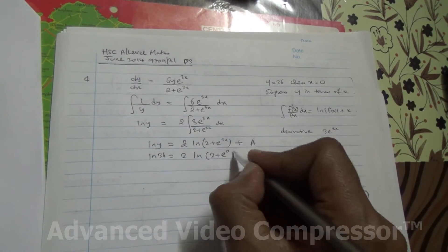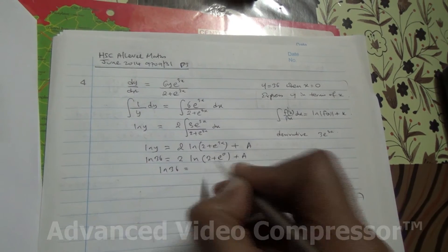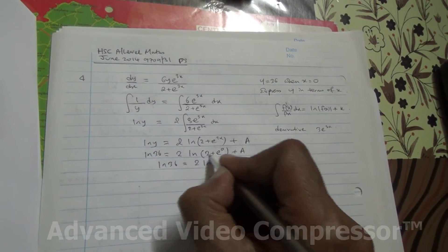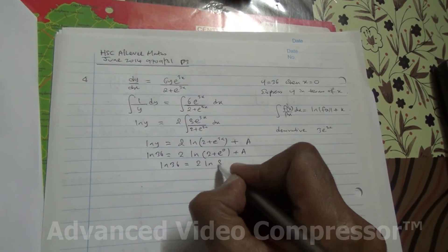because x is 0. So, plus a. So, ln 36 is equal to 2 ln 2 plus e to the power of 0 is equal to 1. 2 plus 1 is 3.